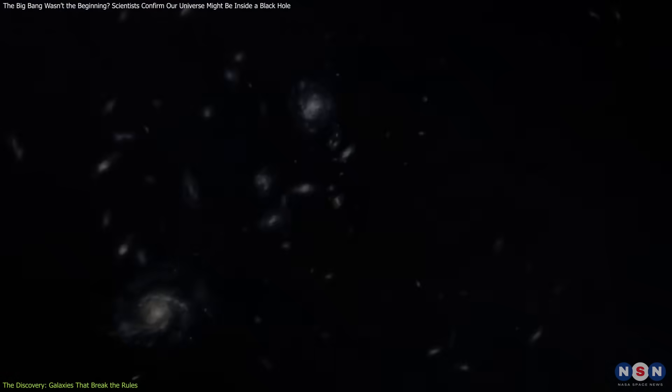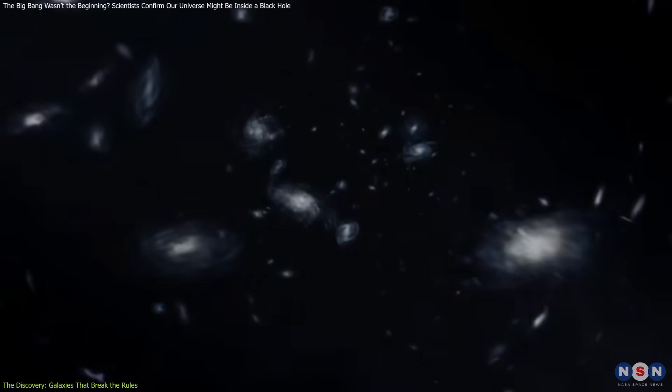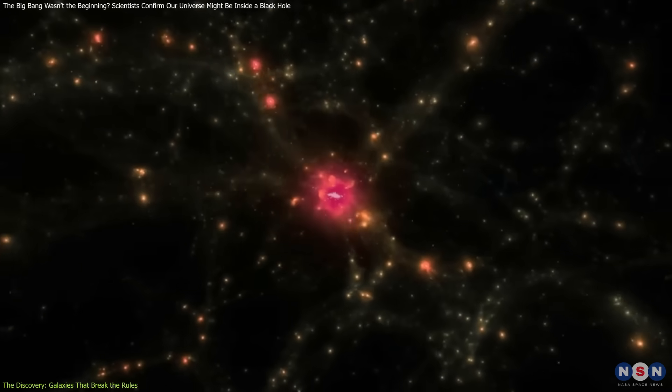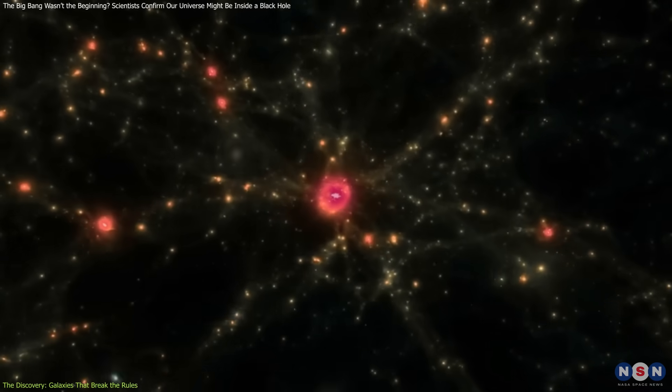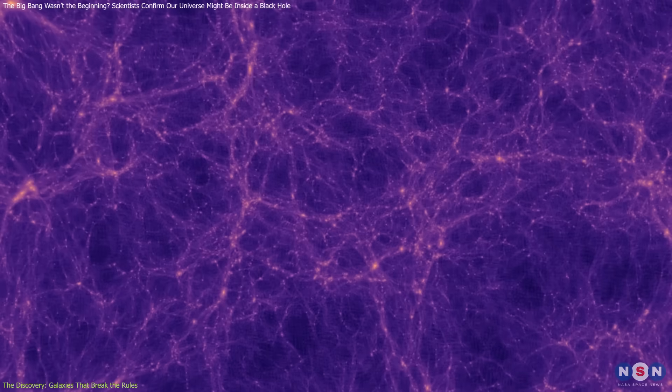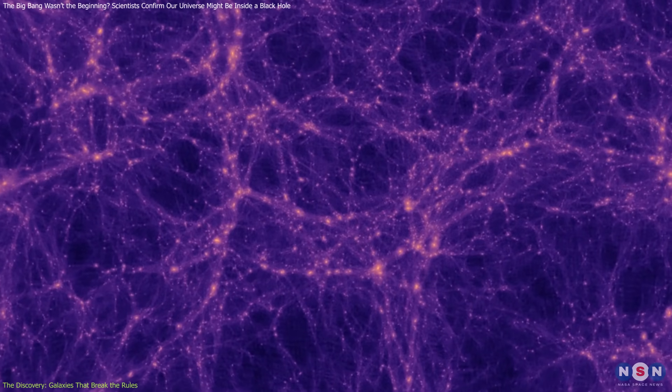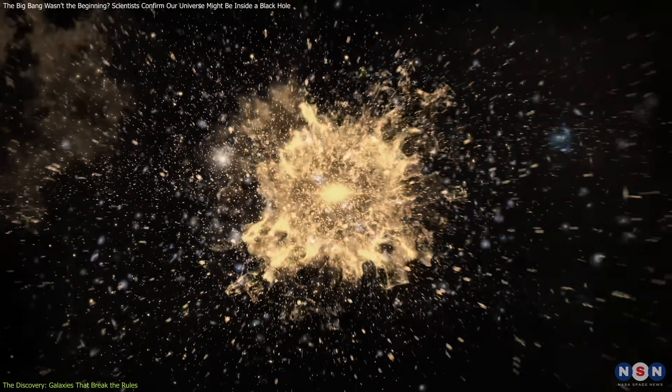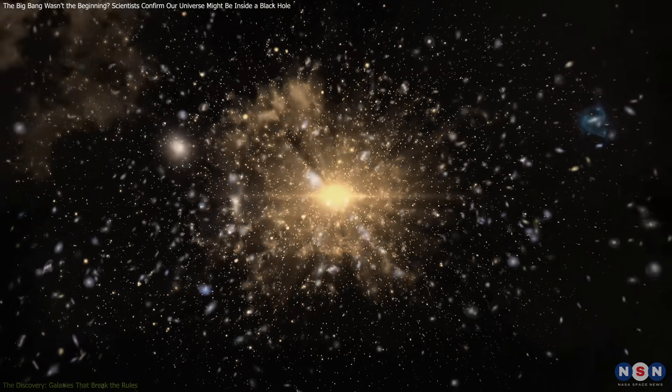This raises big questions. Was there a cosmological axis, a large-scale directional structure built into the universe? If so, what caused it? And could it reveal something deeper about the conditions that gave birth to our universe? This discovery challenges the idea that the universe is random and uniform at its largest scales. If confirmed, it suggests an underlying structure shaping the universe's early days.